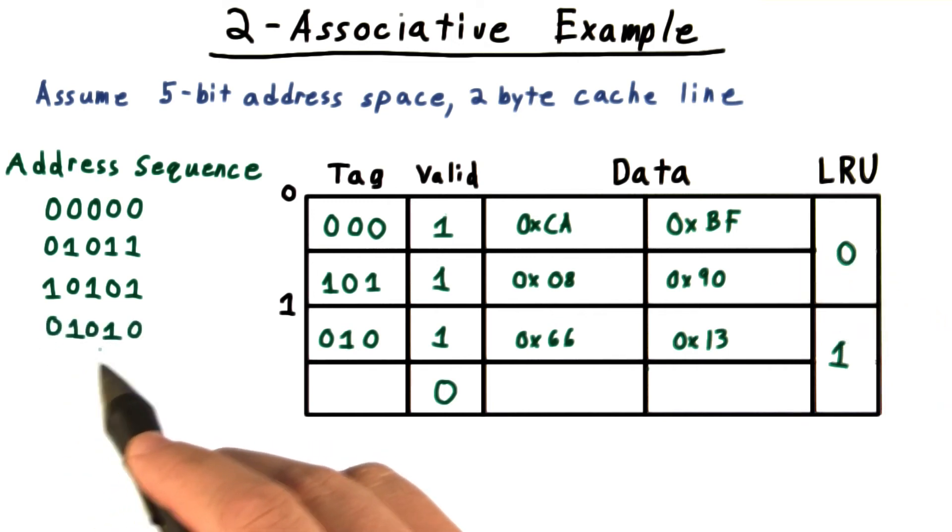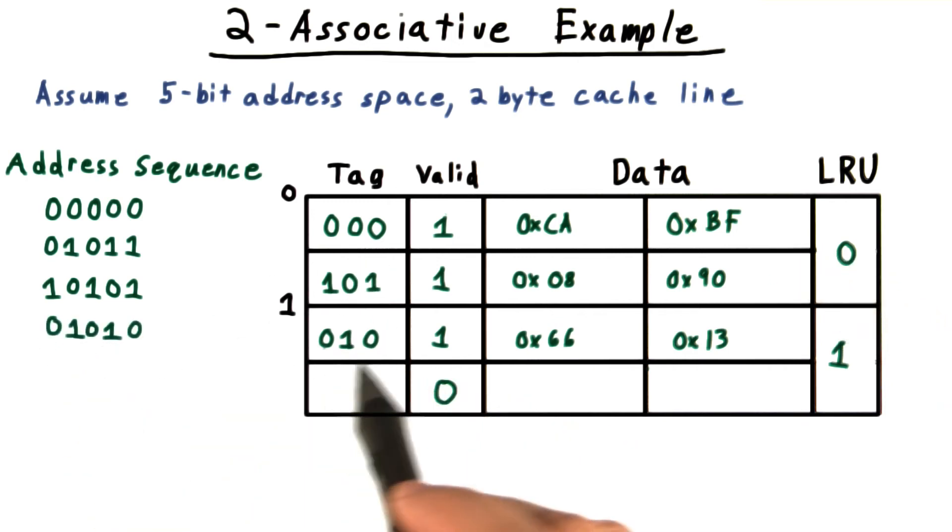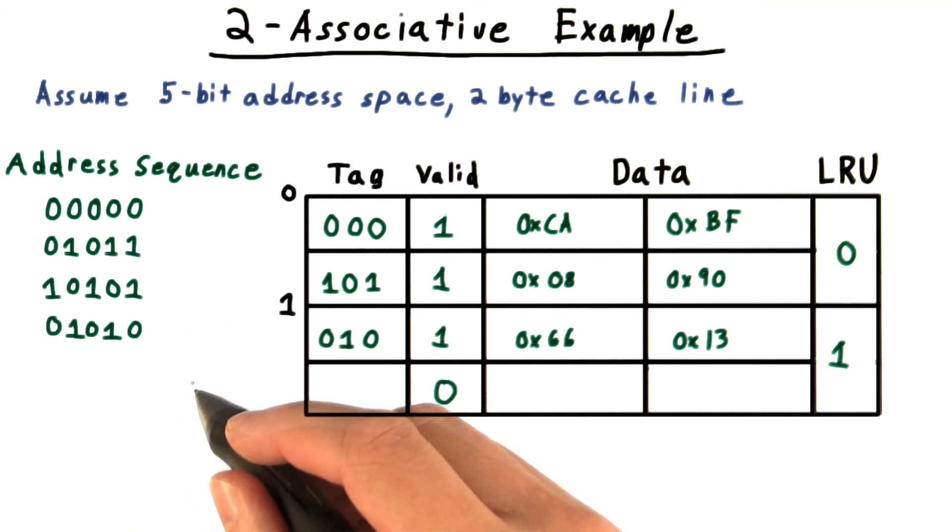Next, we have an address with index one. We check the tag, and we see that it's a hit. My goodness.